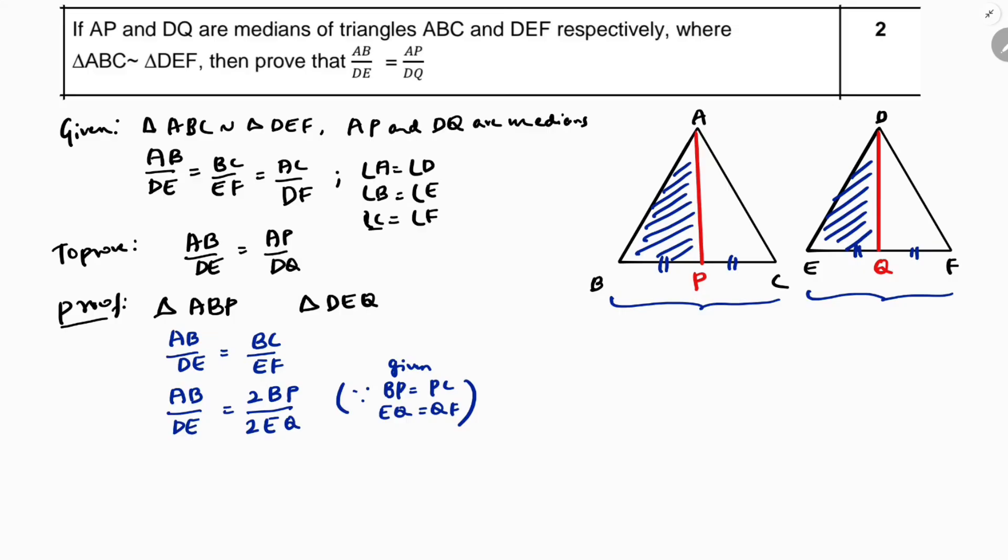So now, you can see, BC is nothing but BP plus PC. BC is, you can write BP plus BP. Because I am taking left side triangle, so that's why I am taking BP. If I will take on the right side, then I need to write PC plus PC. So BC is 2BP. I wrote that.